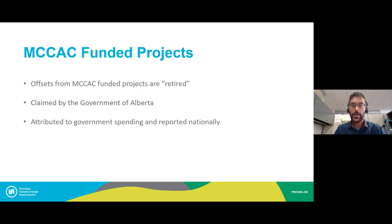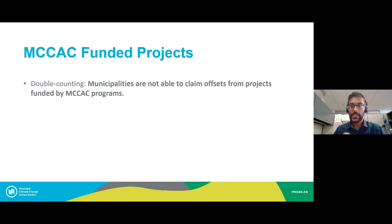Carbon offsets generated by projects funded by the Municipal Climate Change Action Center are what we call retired. These retired credits are claimed by the Government of Alberta, attributed to government spending, and reported on nationally. What this really means is that municipalities are not able to claim offsets from MCCAC-funded projects to put onto the offset market, as that would be what's known as double counting.